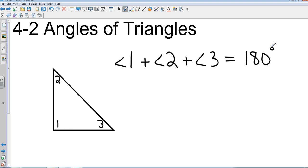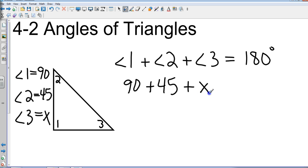At its basic form, if I told you that angle 1 was 90 degrees and angle 2 was 45 degrees and I wanted you to find angle 3, we would just take 90 plus 45 and then we would let this be an unknown. When we add that together we get 135 plus X equals 180.